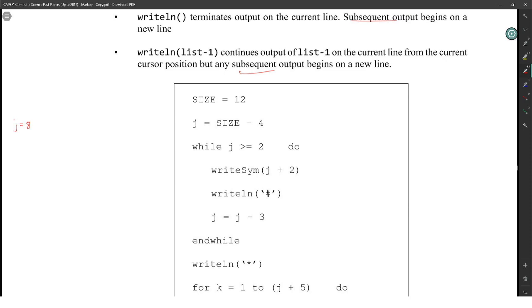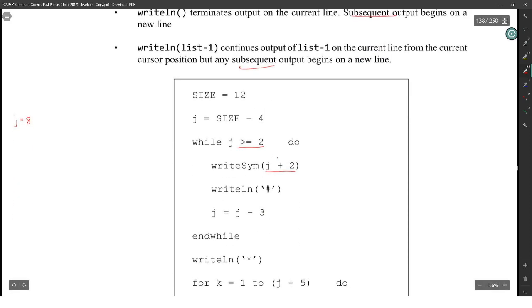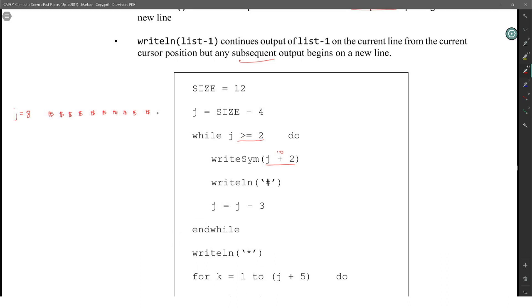While J is greater than or equal to 2, what do we want to do? Write symbol J plus 2. So this symbol is a dollar sign. So write symbol J plus 2. This J plus 2 is going to be 10. So 10 dollar signs. Then we have write line pound sign. So that means the pound sign goes here and the next thing that happens goes down at that location to represent that. And then J is equal to J minus 3. That's going to take our J down to 5. So we look back. Is the J still greater than or equal to 2? Yes, it is. So we're going to write symbol J plus 2, which is 5 plus 2, 7. So we put in 7 of these. 1, 2, 3, 4, 5, 6, 7.